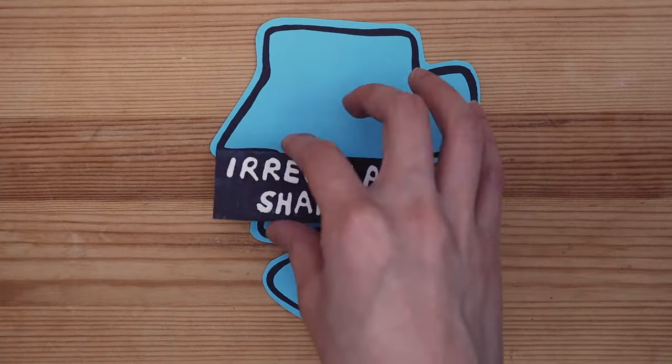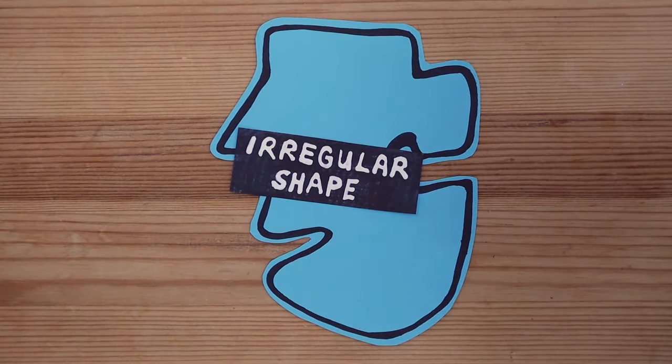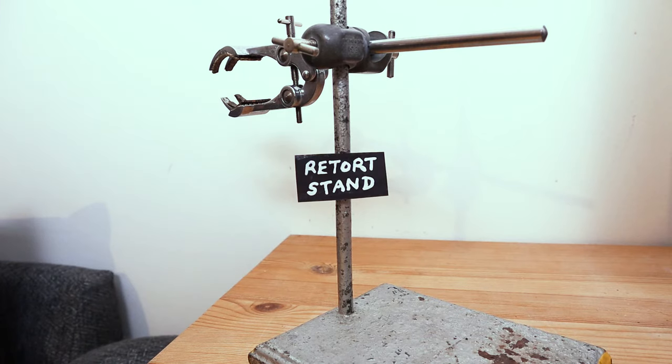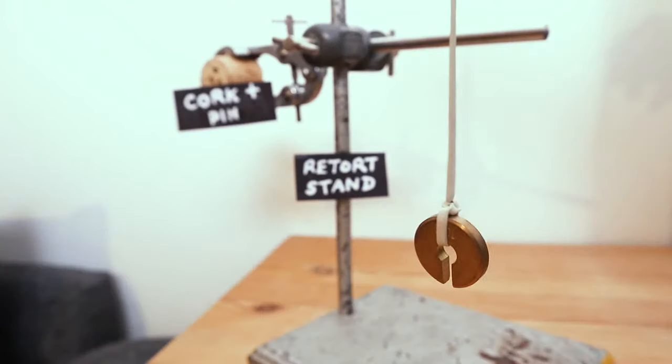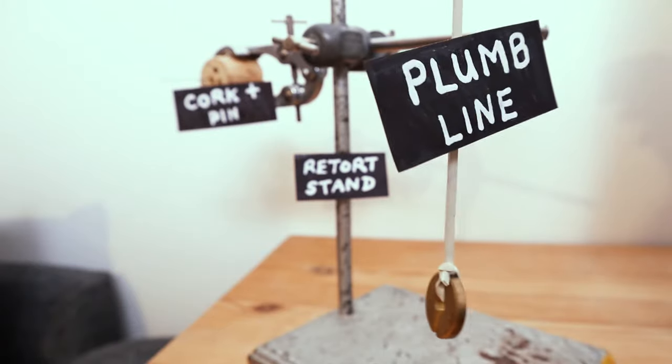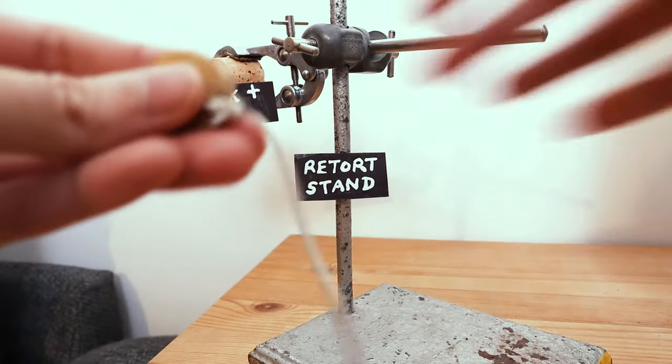When we have an irregular object, it's slightly more complicated. We need a retort stand, a cork with a pin stuck to it, and a plumb line. I've made my plumb line from a hanging mass and a piece of string.